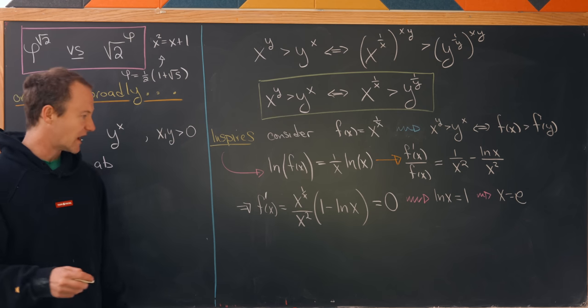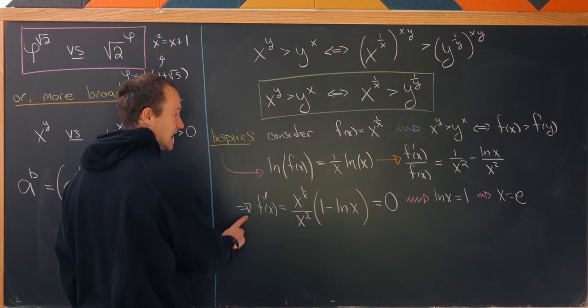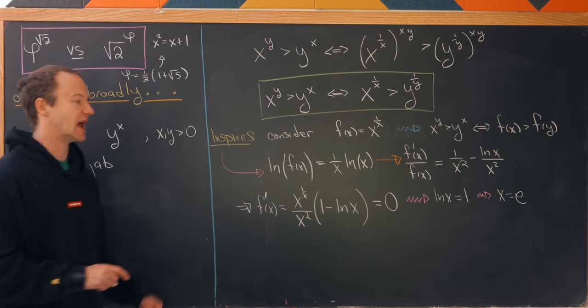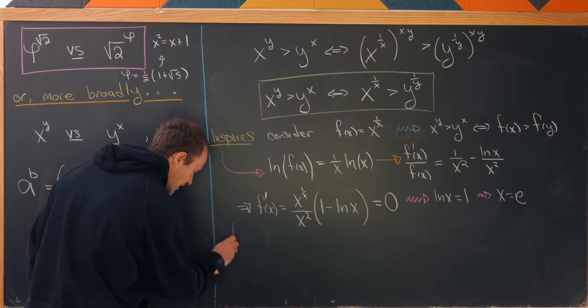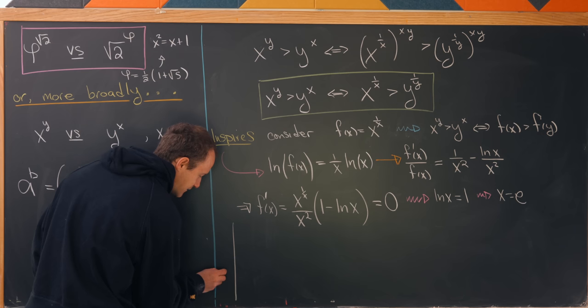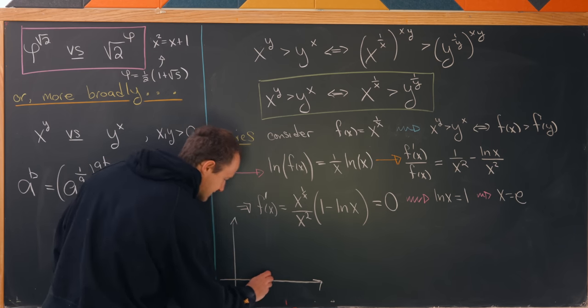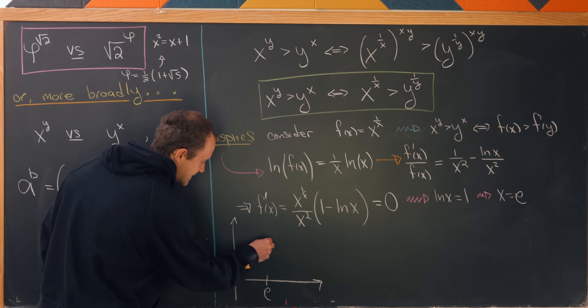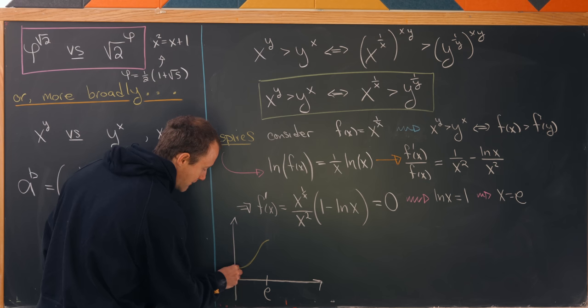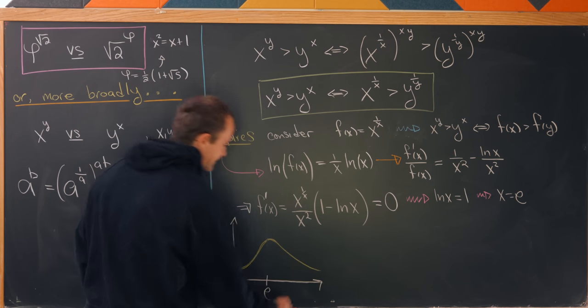And then it's fairly easy to check that f of x is increasing up to e and decreasing from e. And that allows us to draw the following nice picture. So this will be the graph of f of x. So let's put e right here maybe. And then we'll have this thing has a local maximum at e.